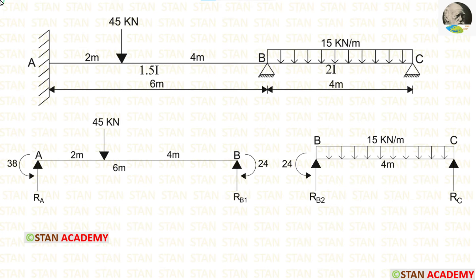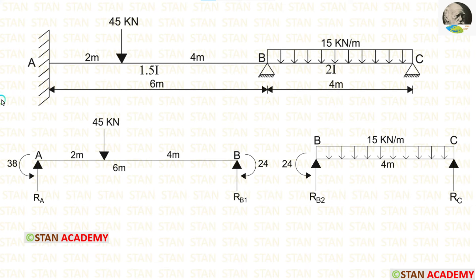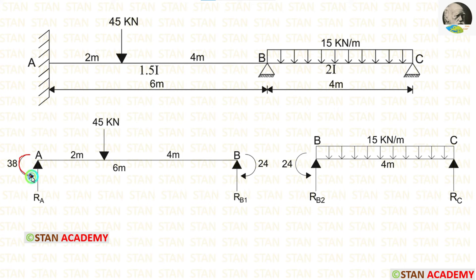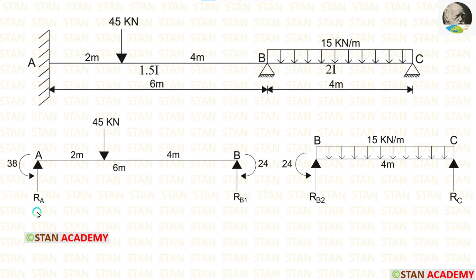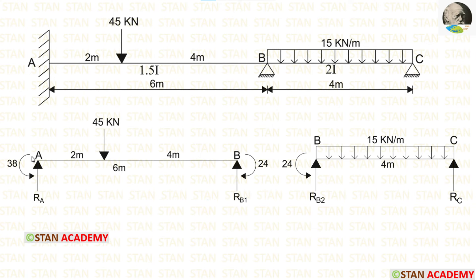Now let us calculate the reactions. This beam has two spans AB and BC, so we split the beam into two parts. Moment MA acts in the anticlockwise direction. B is a joint, so moment MB acts in both directions: clockwise towards span AB and anticlockwise towards span BC. When we calculate reactions, we have to consider these two moments.